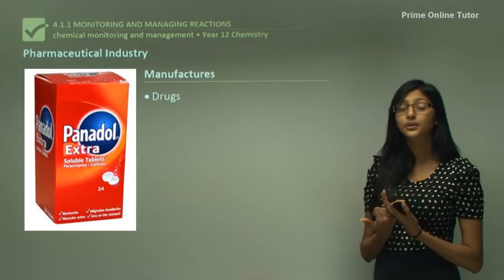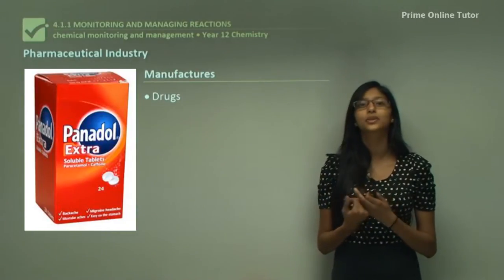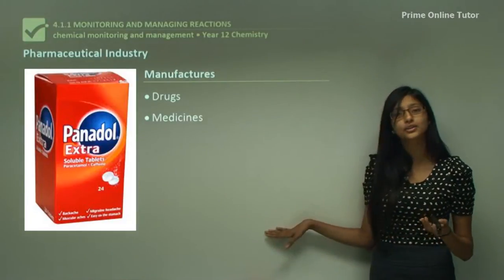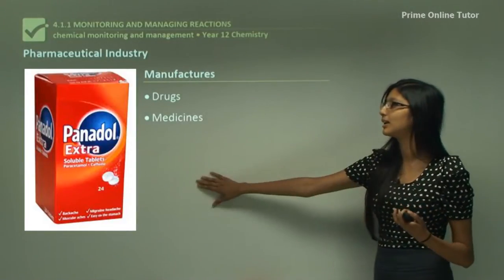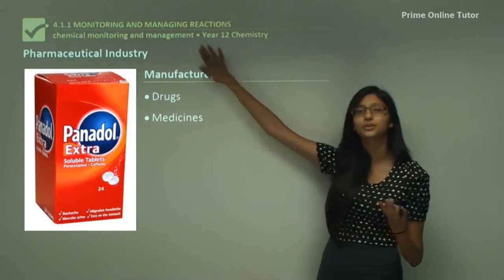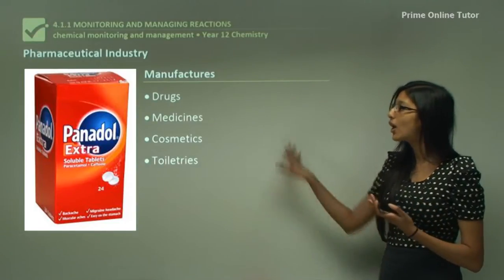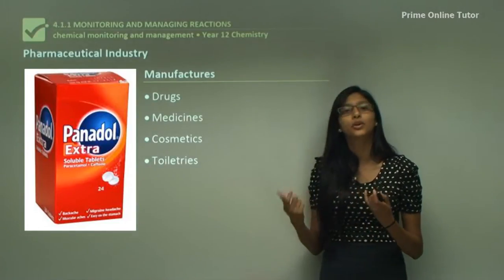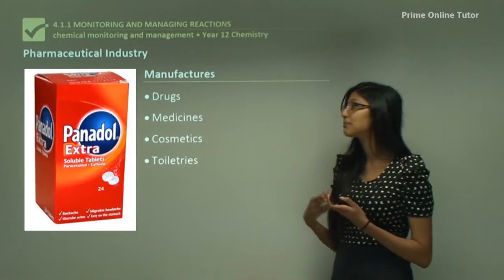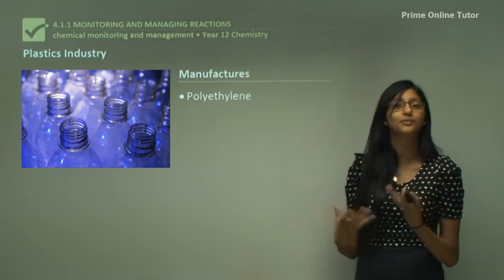Now let's look at the pharmaceutical industry. As the name suggests, the pharmaceutical industry manufactures drugs and medicines such as Panadol. So when you're sick or in pain you would take Panadol, and it comes from the pharmaceutical industry. Then we have cosmetics and toiletries as well. Now all these things would actually be stored or packaged in plastics, which are also made by our plastics industry.